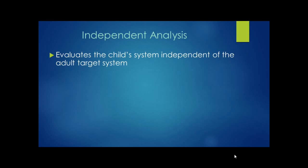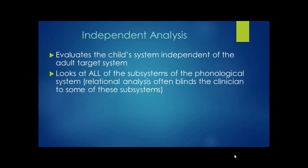So we actually aren't looking at whether the child is able to produce a sound or a word like the adult produces it. We actually are not interested in what the target is. We look, then, in an independent analysis at all of the subsystems of the phonological system. In a relational analysis, we are often blinded to some of the subsystems — we only look at whether the child can produce this sound in relation to the adult form, and that blinds us to the other pieces that are more helpful for clinical decision-making.